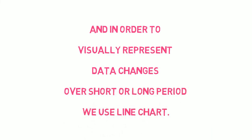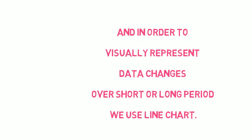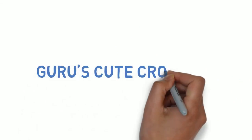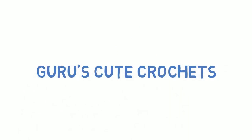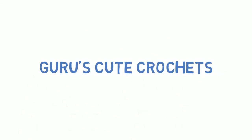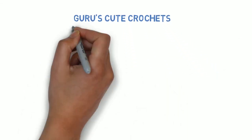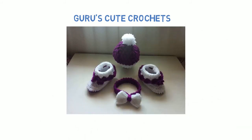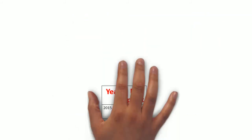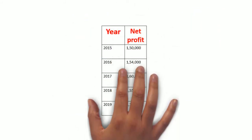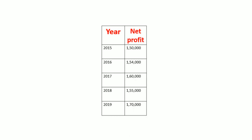Let's understand this with an example. Let's imagine there is a company called Guru's Cute Crochets and they sell crochet items online. This data shows the company's net profits for the past five years. Let us put a line chart for this.